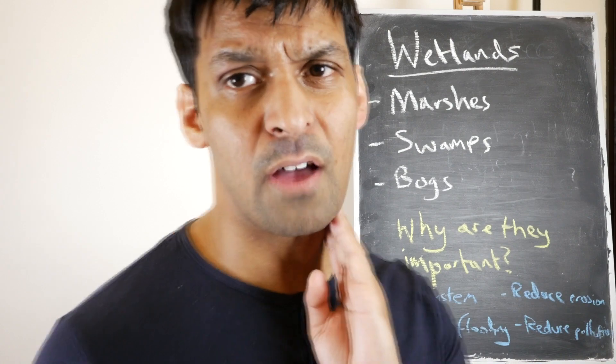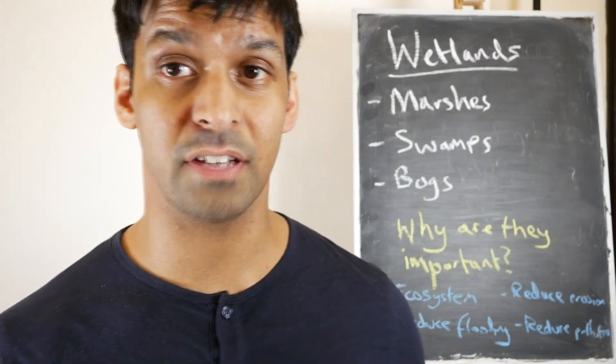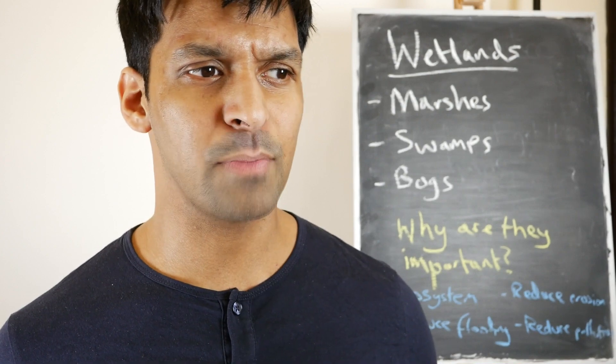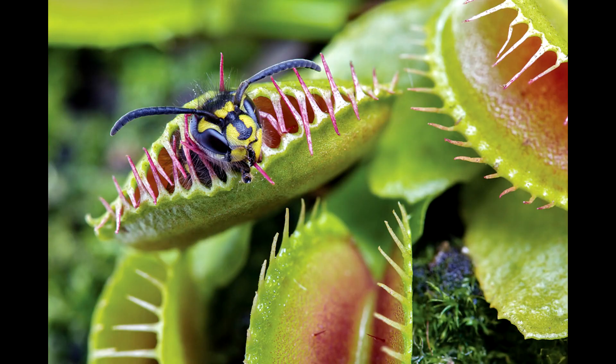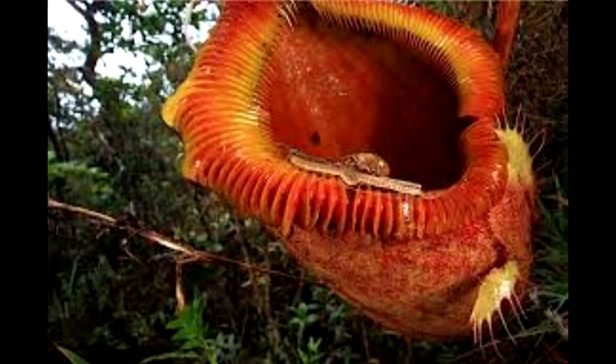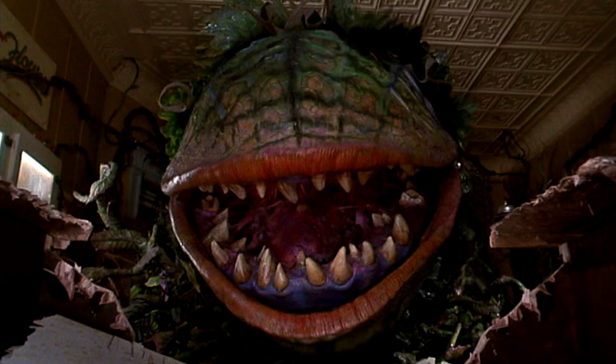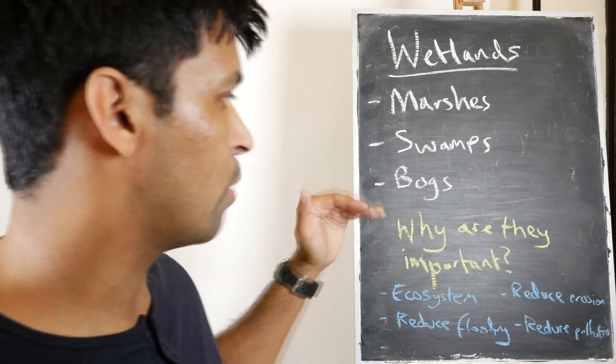Bogs themselves are very low in nutrient content, which means they support very particular types of plants. You might have seen Venus flytraps and other carnivorous plants — they live in bogs because they can't get the nutrients from the ground, so they have to eat flies and other insects and bugs. That's the difference between marshes, swamps, and bogs.